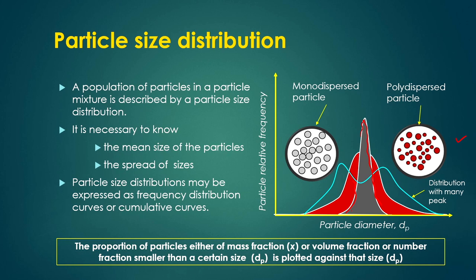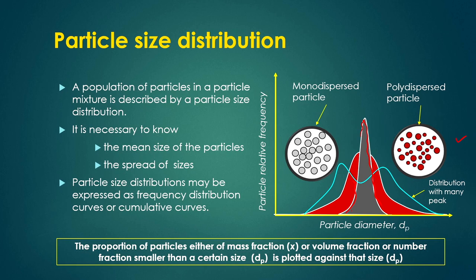This distribution may be a frequency distribution or cumulative distribution. In cumulative distribution, the numbers from each class are kept on adding for the next classes. The proportion of particles — either by mass fraction, volume fraction, or number fraction — smaller than a certain size dₚ is plotted against that size dₚ. We can represent the distribution not only by number frequency but also in terms of volume fraction or mass fraction of the particles.